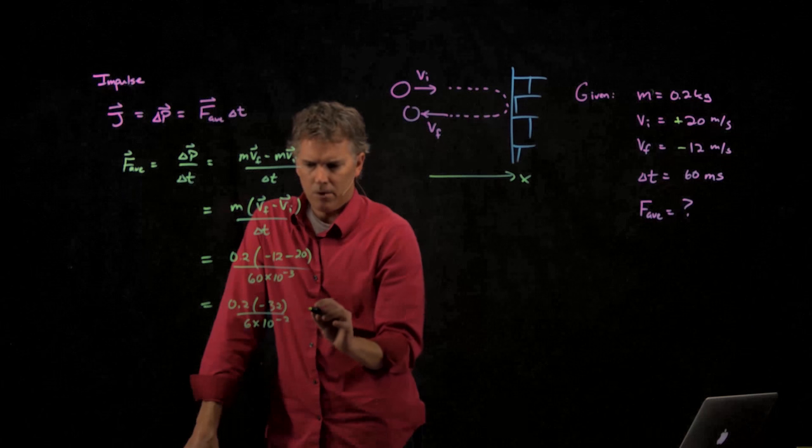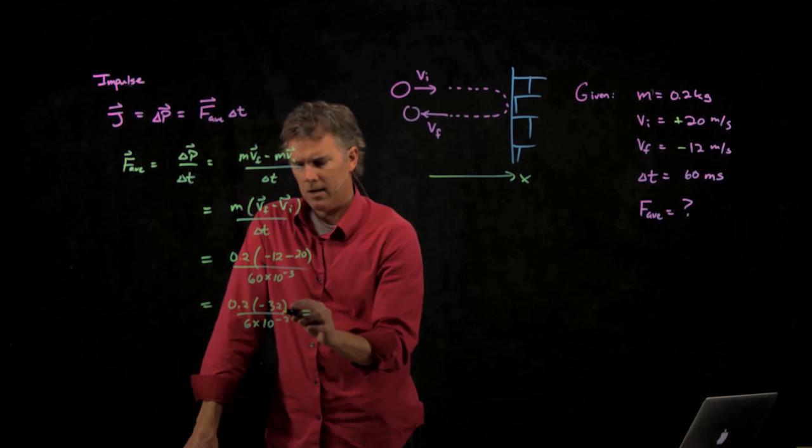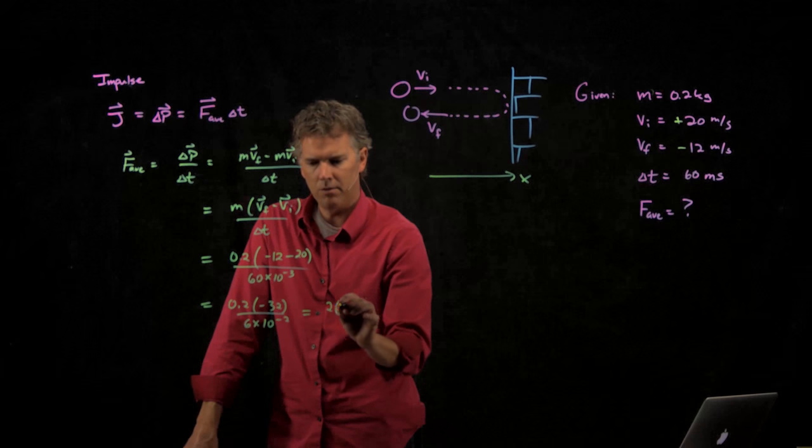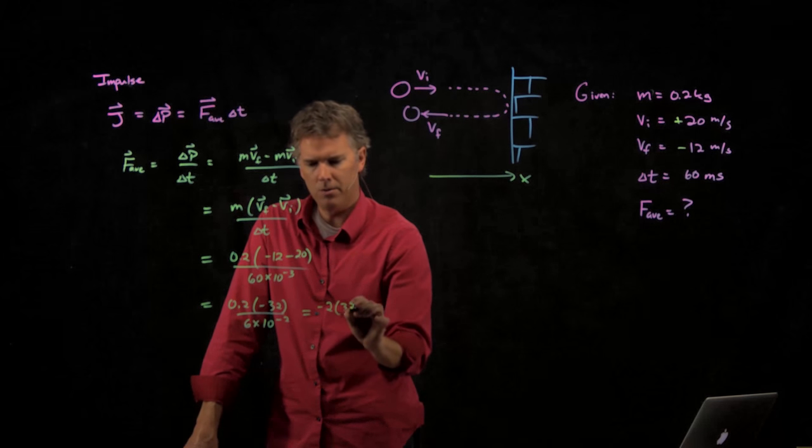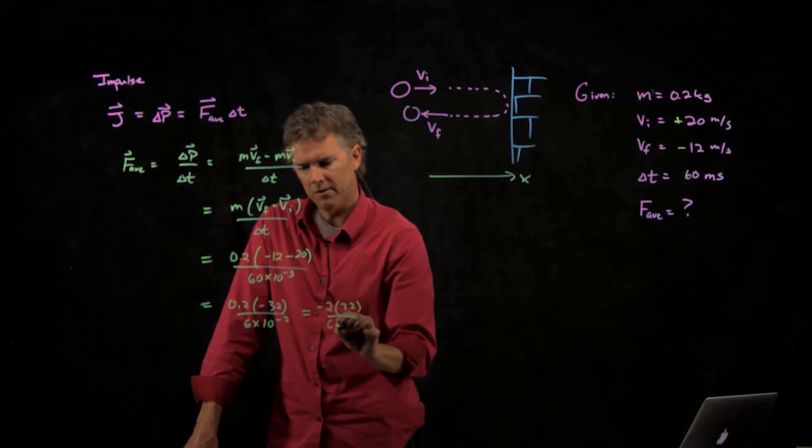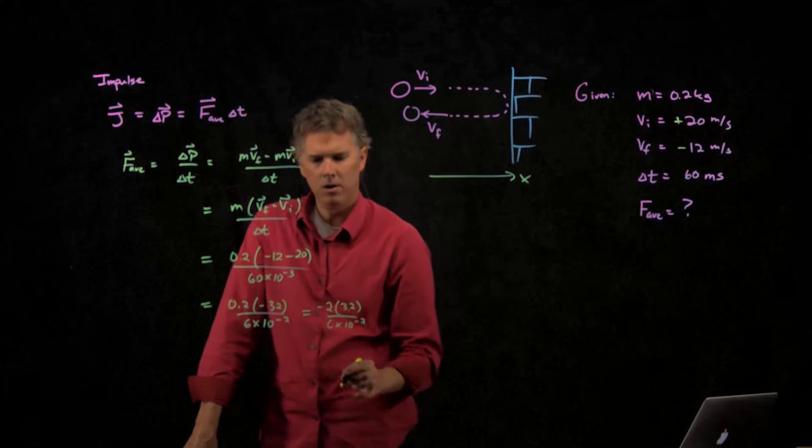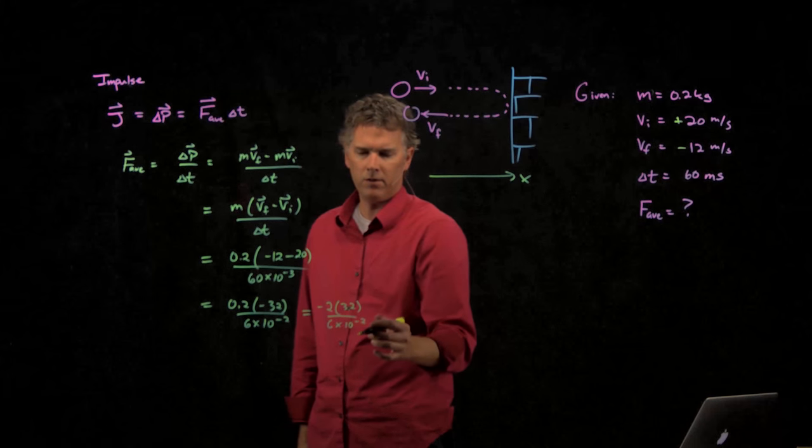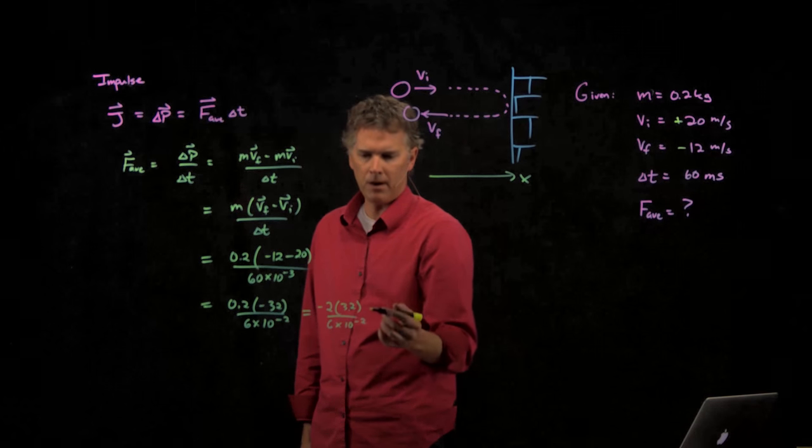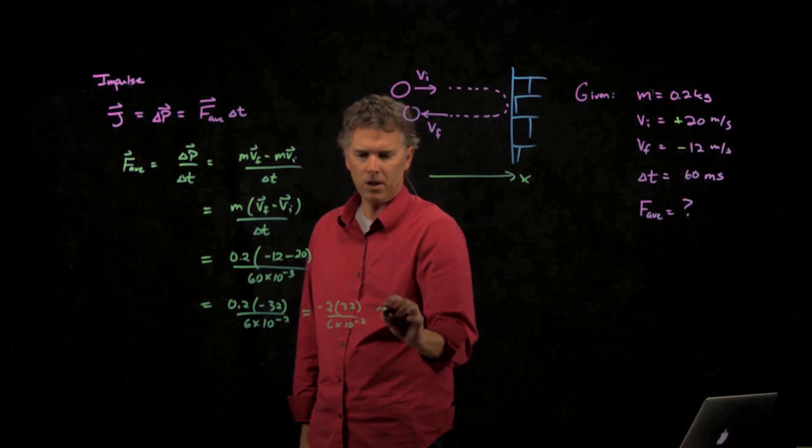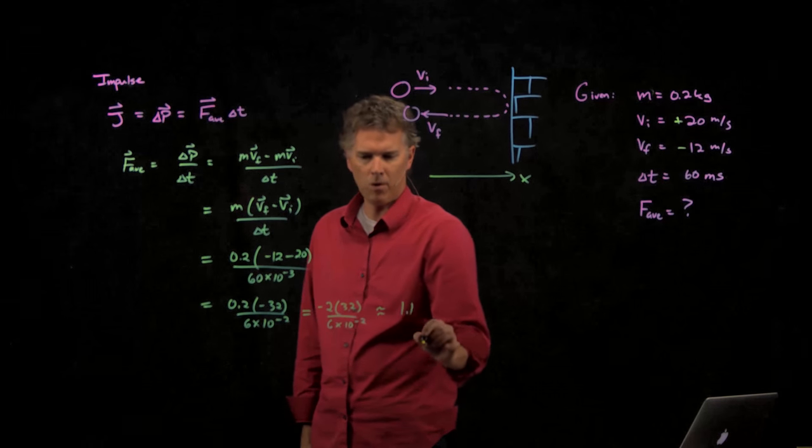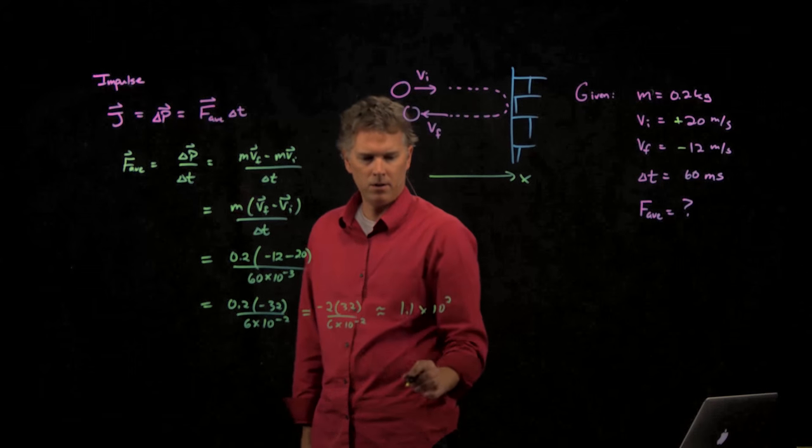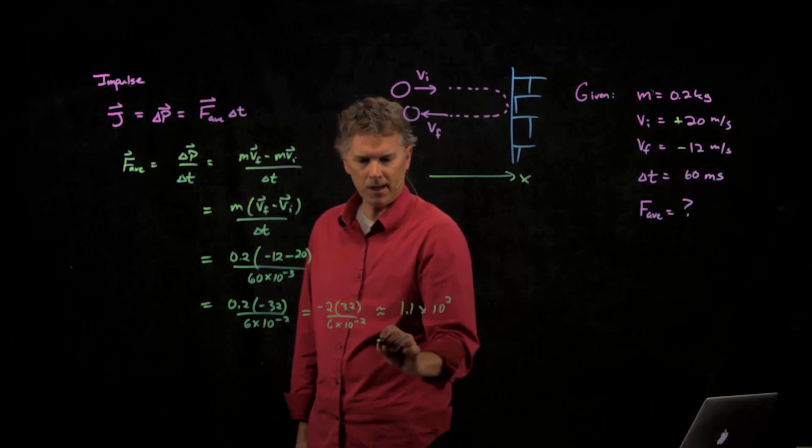And so what do we get? This is 2 times 3.2 over 6 times 10 to the minus 2. That's got to be pretty close to 1. 3.2 over 6 is a little bit bigger than a half, so this is going to be, I'm going to say, 1.1 times 10 to the 2. So that's what I would say. Did anybody get a real answer for that?